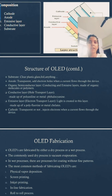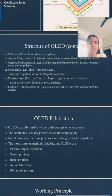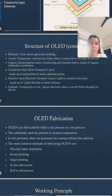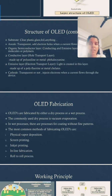The substrate required is clear plastic, glass foil, or similar materials. The anode is a transparent terminal that removes electrons and adds holes when a current flows through the device. There are two organic semiconductor layers: the conducting layer and the emissive layer, made up of organic molecules or polymers. The conductive layer is also called the hole transport layer, made up of polyaniline. The emissive layer is also called the electron transport layer — light is created in this layer.